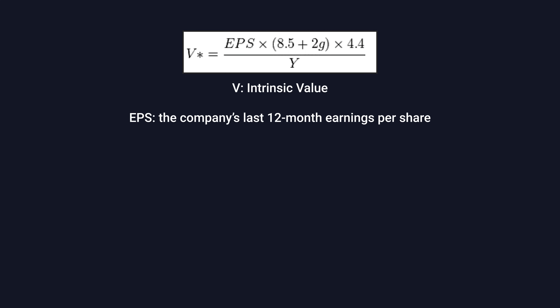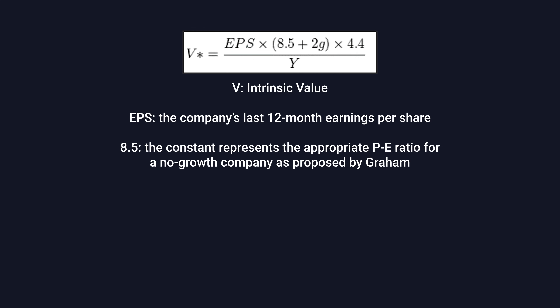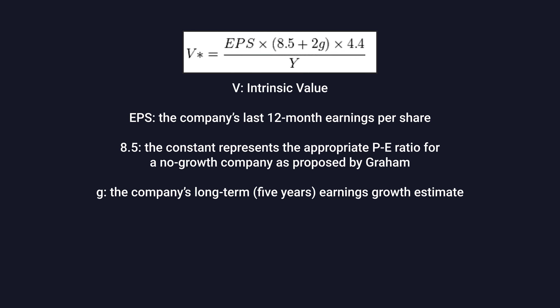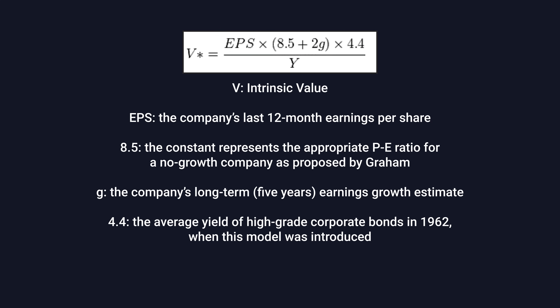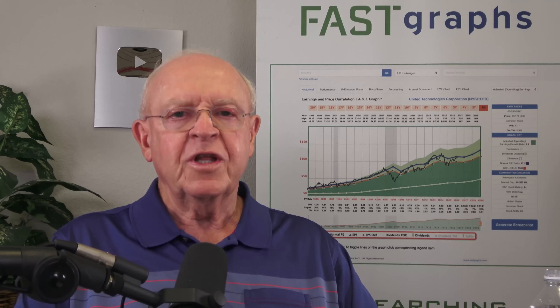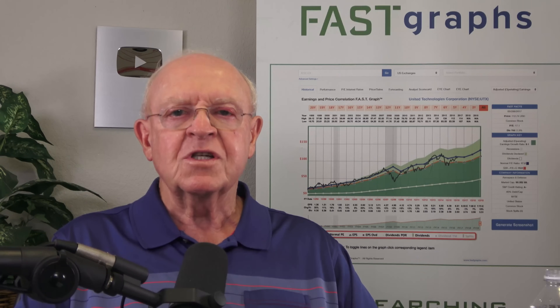Ben's revised 1974 intrinsic value formula is as follows: V, or intrinsic value, is earnings per share — the company's last 12-month earnings per share — times 8.5, the constant representing the appropriate P/E ratio for a no-growth company as proposed by Ben, plus two times G, the company's long-term five-year earnings growth rate. Then 4.4 is the average yield of high-grade corporate bonds in 1962 when this model was introduced, and Y is the current yield on AAA corporate bonds. The FastGraphs fundamental analyzer software tool automatically applies Ben's classic formula on companies when earnings growth is 5% or less. This is an important and necessary adjustment, as I will discuss in greater detail later.